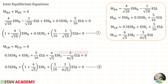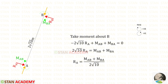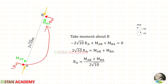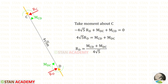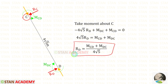We know that in this analysis we need one more equation. Let us take member AB and make a relation for RA. We have to assume that the moments MAB and MBA are acting in the clockwise direction. Let us take moment about B and find RA. RA is acting in the anticlockwise direction, so it will be negative, and the distance is 2 root 10. The two moments are acting in the clockwise direction, so both of them are positive. Finally, we will get an expression for RA. Now let us take member CD and make an expression for RD by taking moment about C.